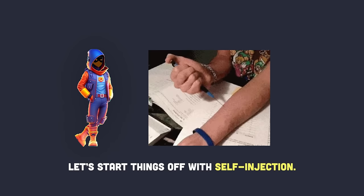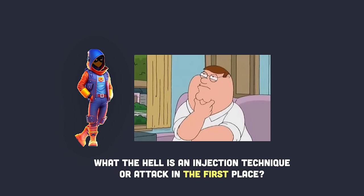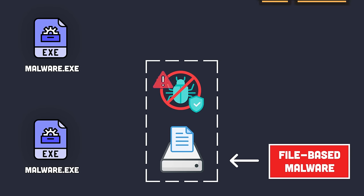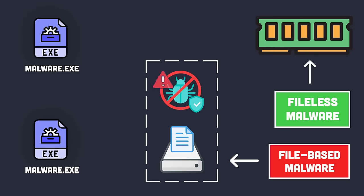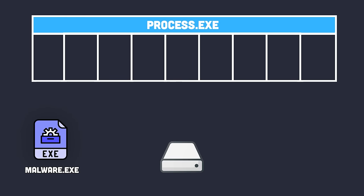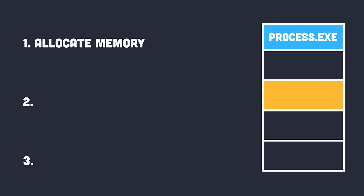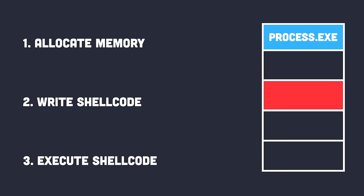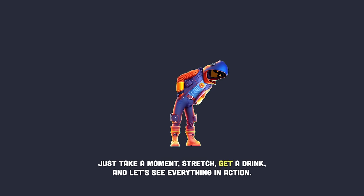Let's start with self-injection. Fileless attacks are attacks that only take place in memory without writing any files to disk. We want to inject our malicious shellcode into a process's memory and have it executed there. All injection attacks have three steps in common: first, allocate memory for the shellcode; second, write or copy the shellcode into the allocated memory; and third, execute the shellcode.